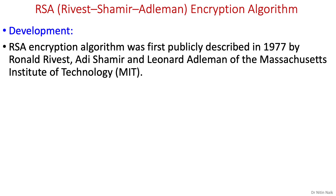We start with a brief history. In 1977, three young scientists Ronald Rivest, Adi Shamir, and Leonard Adleman of MIT presented an asymmetric or public key encryption algorithm known as RSA encryption algorithm. Using the first letters of their last names, they derived the name RSA.